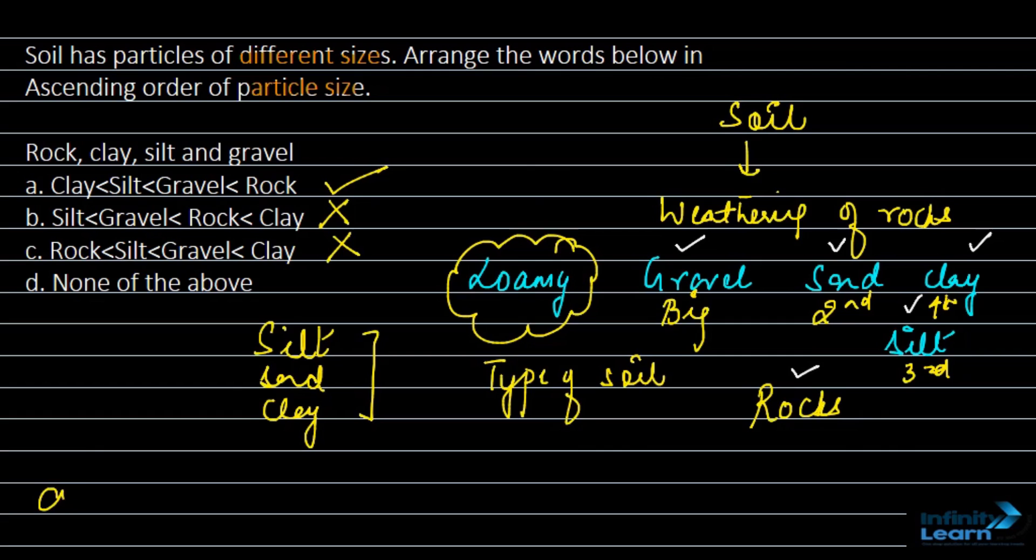So here option A is correct. Because in second and third option, you have clay as the biggest one. And we know that clay particles are the smallest one. So option A is the right answer. I hope you got it. Thank you.